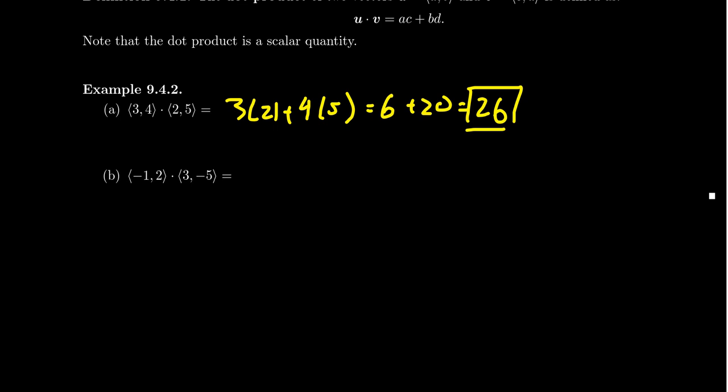Another example, let's take (-1,2) dot (3,-5). So multiply together the horizontal, that gives you a -3. Then multiply together the vertical, that gives you a -10. That adds up to be -13. And so algebraically, that's how we compute the dot product. It's a very simple calculation in that regard.